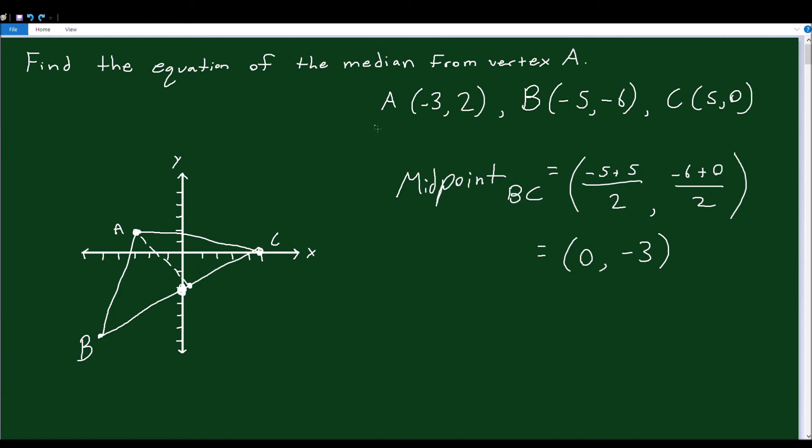So we have point A, which is negative 3, 2. And we have this midpoint, which is 0, negative 3. Those are two points on this dotted line. So we have two points. Let's find the slope. The slope is equal to Y2 minus Y1 over X2 minus X1. That's your rise over run.